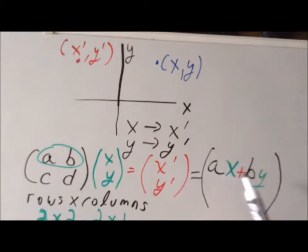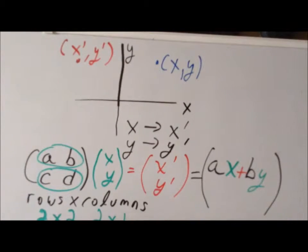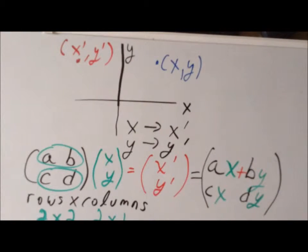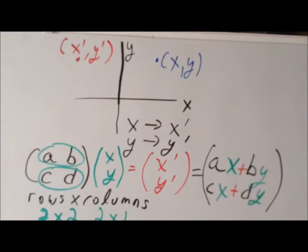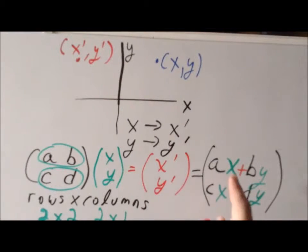Our second entry comes from the second row C, D multiplied times the first column X, Y. Term by term: C multiplies X, and D multiplies Y. Those two terms are added together. So the product of matrix ABCD times the matrix X, Y is a two by one matrix: the first entry is AX plus BY, and the second entry is CX plus DY.